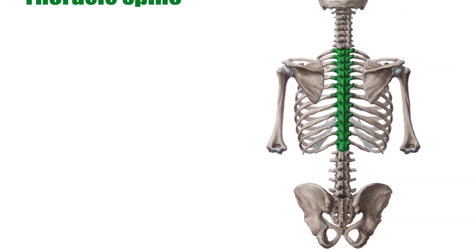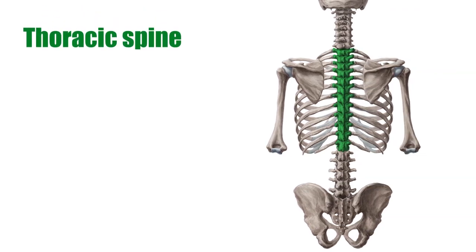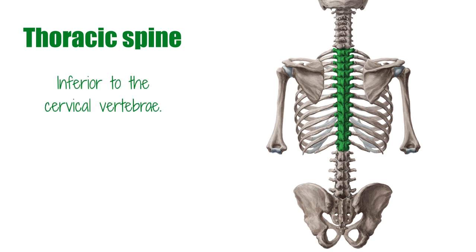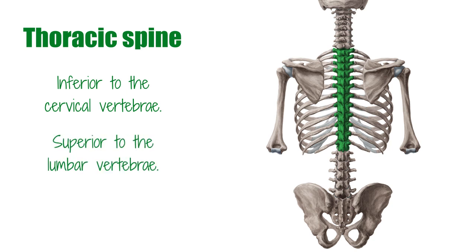The thoracic vertebrae, seen here on this image highlighted in green from a dorsal view, are located in the middle section of the vertebral column, specifically inferior to the cervical vertebrae and superior to the lumbar vertebrae. These vertebrae span the large majority of the chest cavity area.